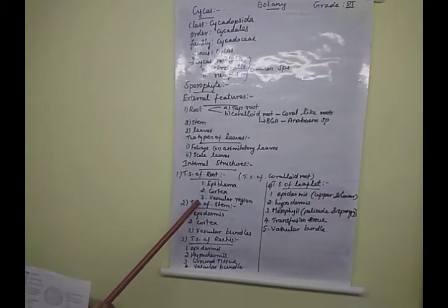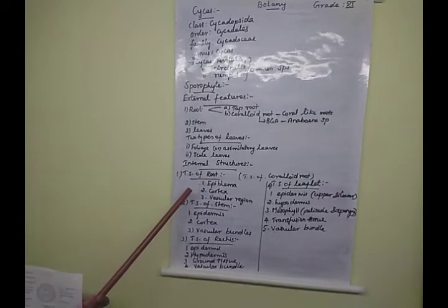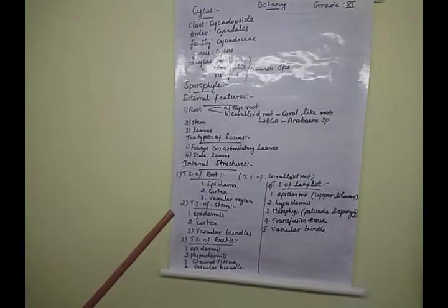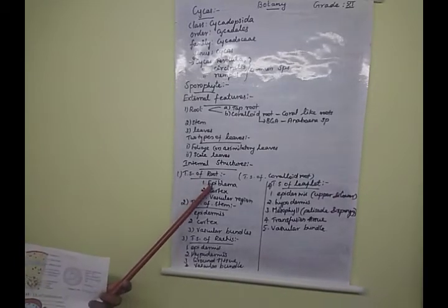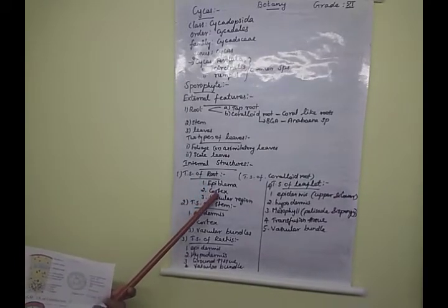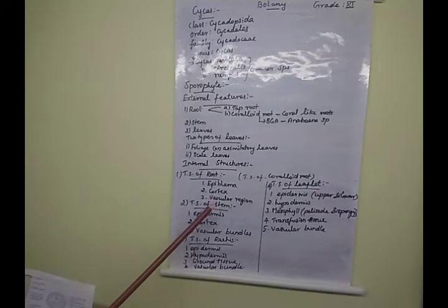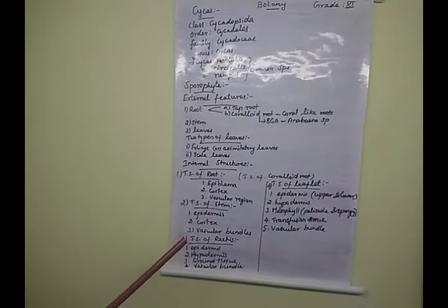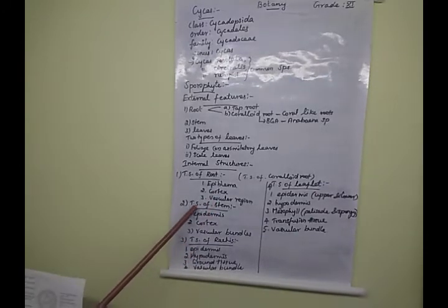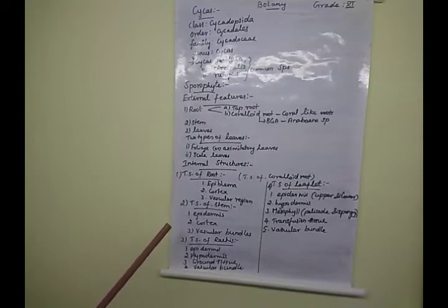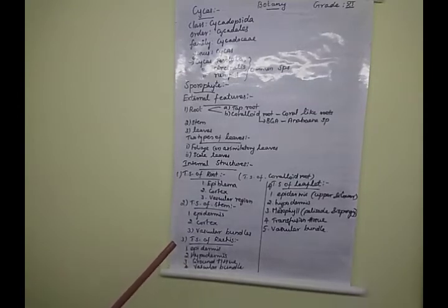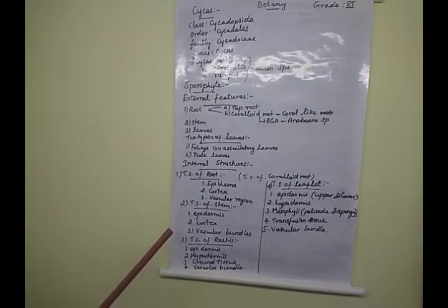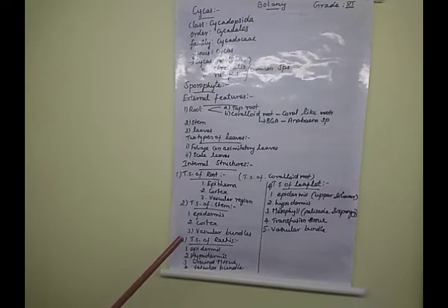What are the regions shown in the TS of the root? Epiblema, cortex, and the vascular elements. These are very important — five mark questions. These four transverse section questions are very important, children, along with the diagram.